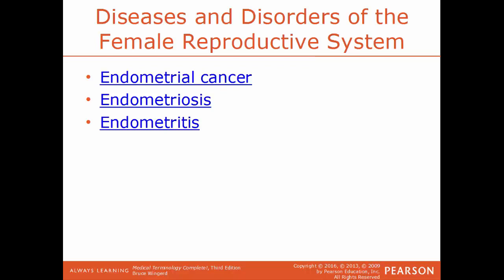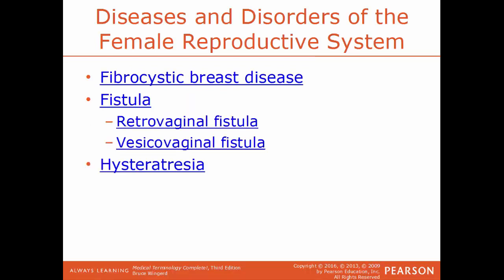Fibrocystic breast disease is a benign condition where the woman has painful lumps in the breast — not dangerous, but can become bothersome or uncomfortable. A fistula is a permanent abnormal passageway between two organs in the body or between an organ and the exterior. An example is a rectovaginal fistula — a connection between the rectum and the vagina, a passageway that would not normally be there. A vesicovaginal fistula is a connection between the vagina and the bladder.